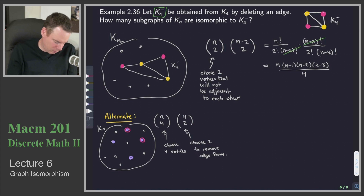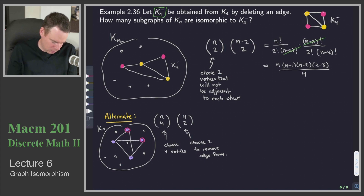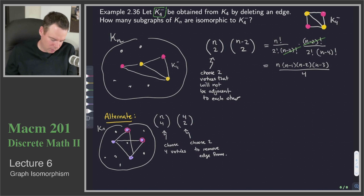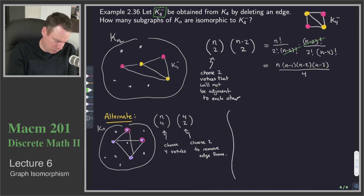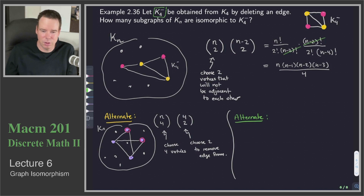Once I've done those choices, the resulting graph has the connections, but then I've removed that final edge — the one that connected the two red vertices. So there's an alternate solution, and I'll leave it for you to check that n choose 4 times 4 choose 2 is actually equal to the value we had above.